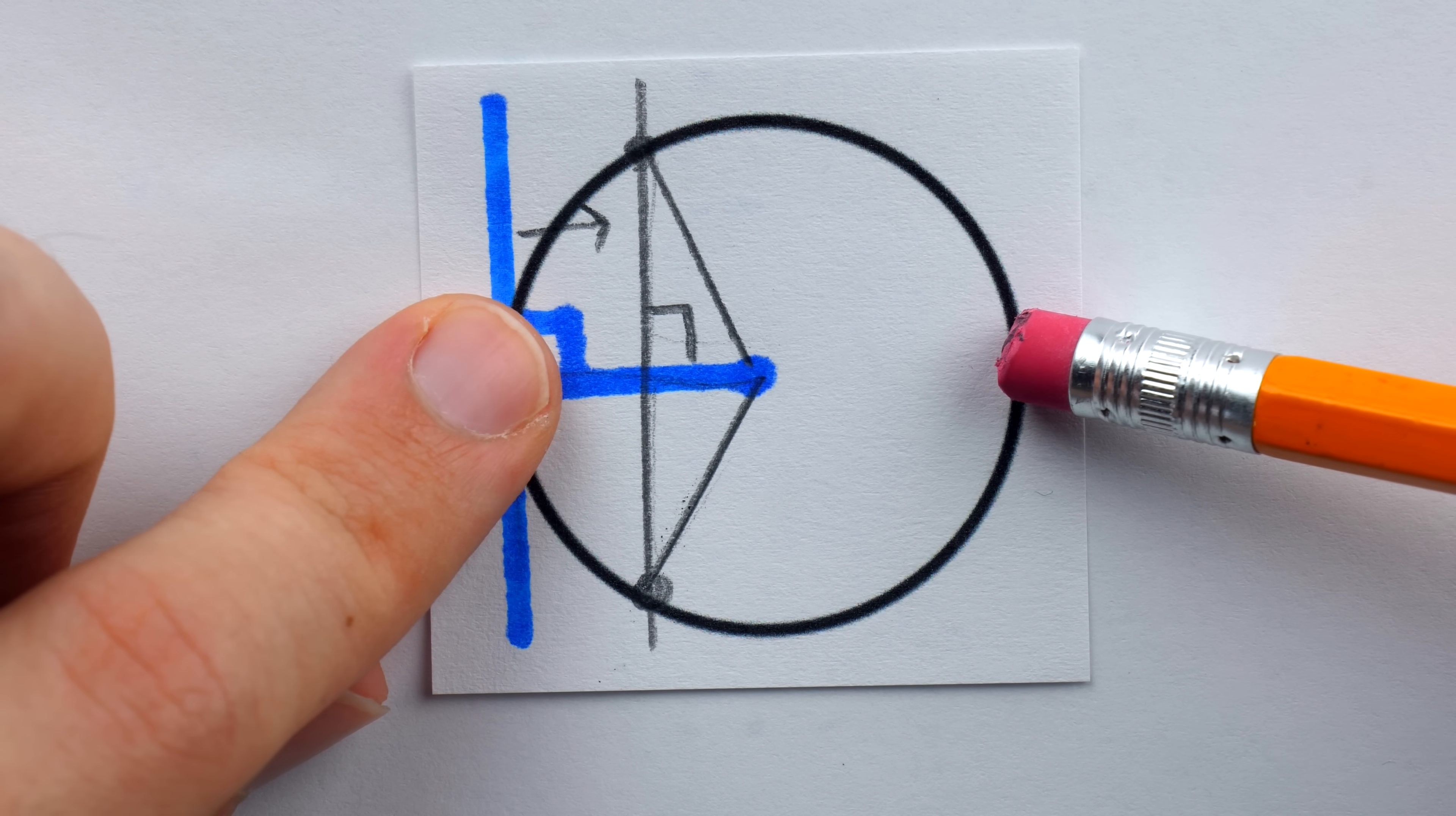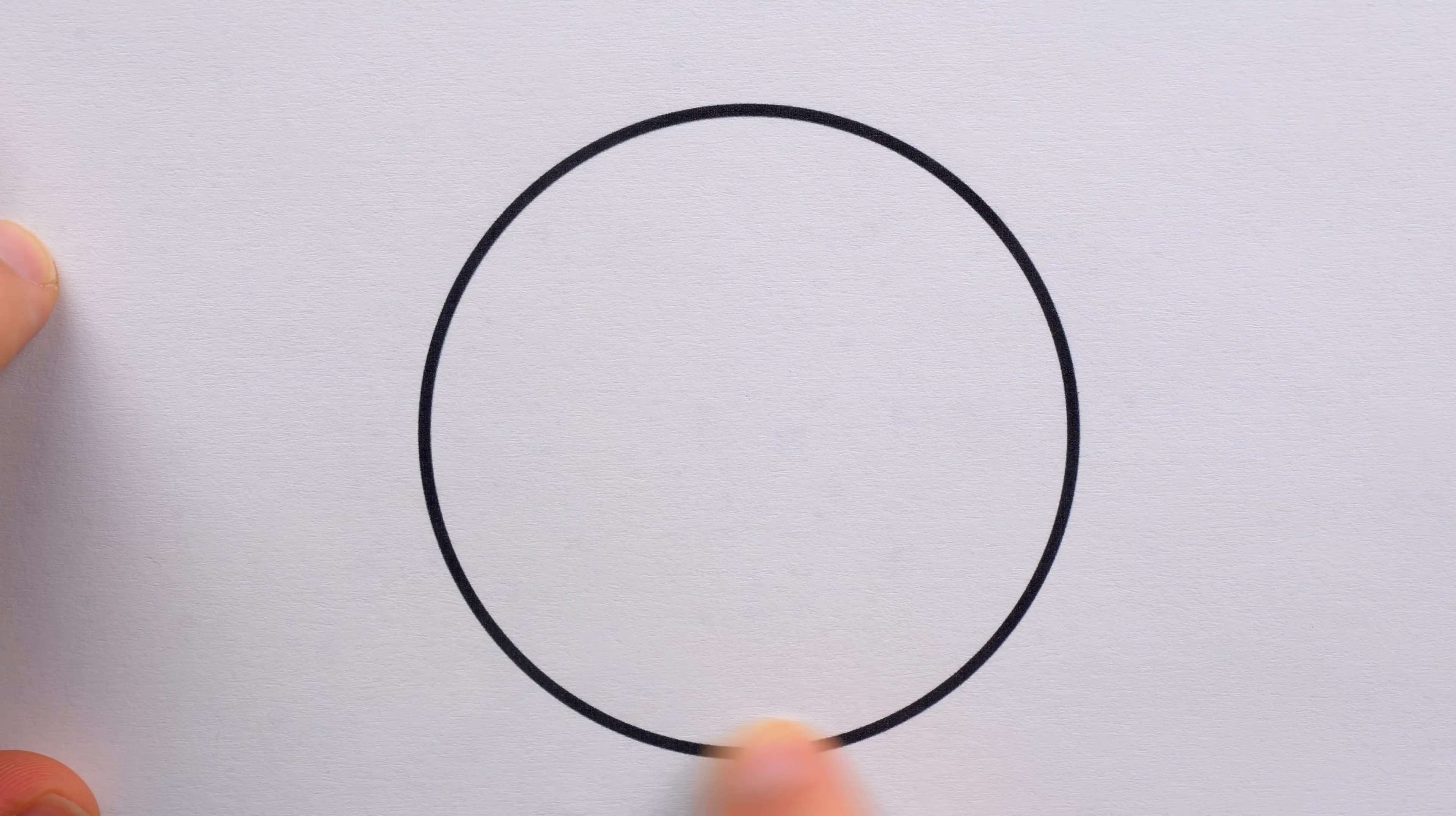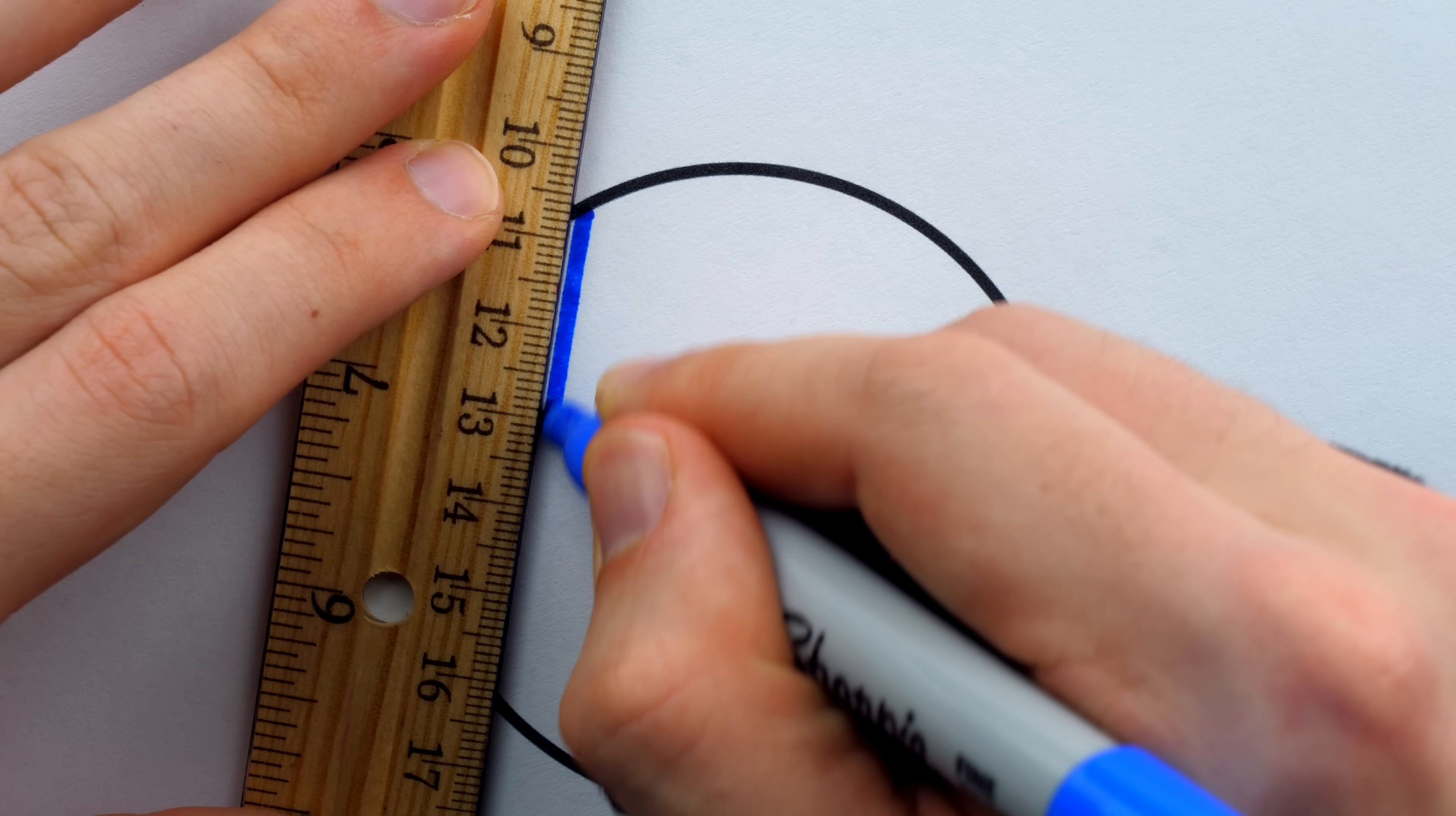So if we're given an arbitrary circle, we can't just pick out the center at a glance, but it is very easy to construct a chord of the circle. Of course, by definition, a chord is just a segment lying inside the circle with its endpoints on the circumference. And notice how we use the straight edge there.